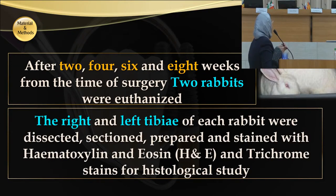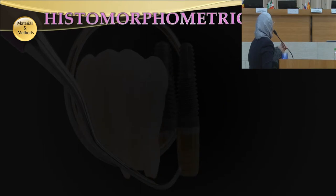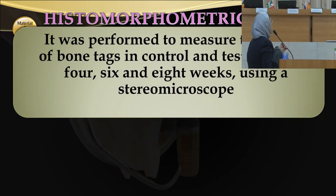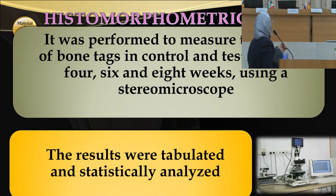After two, four, six, and eight weeks from the time of surgery, two rabbits were euthanized. The right and left tibiae of each rabbit were dissected, sectioned, prepared, and stained with H&E and trichrome stain for histological study. Histomorphometric analysis was performed to measure the length of bone tags in control and test groups at four, six, and eight weeks using stereomicroscopes. The results were tabulated and statistically analyzed.